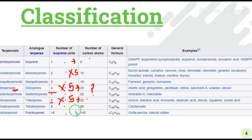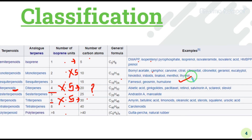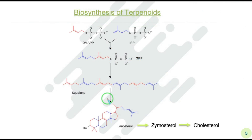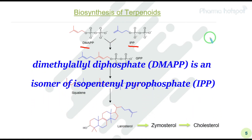An important example here is DMAPP — dimethylallyl diphosphate — and IPP, which stands for isopentenyl diphosphate. DMAPP is actually the isomer of IPP. These are key starting compounds in the biosynthesis of terpenoids.